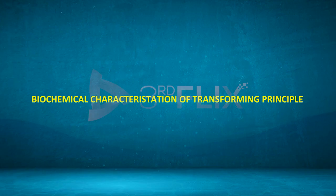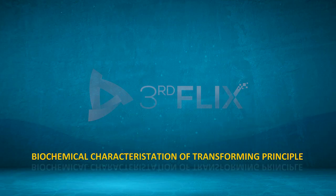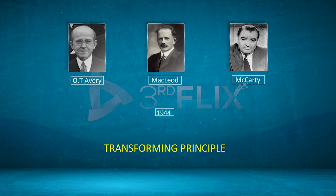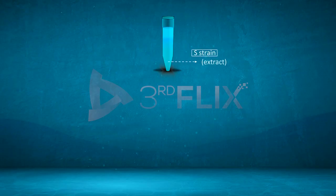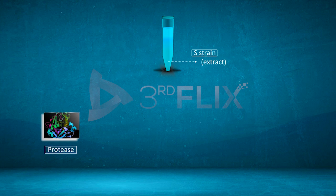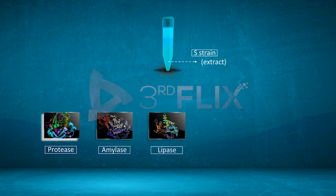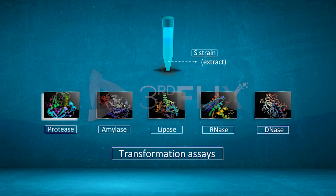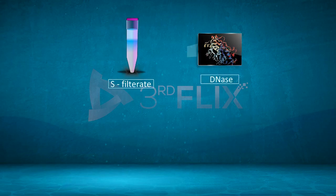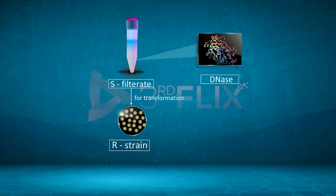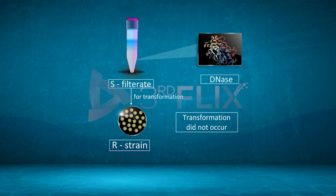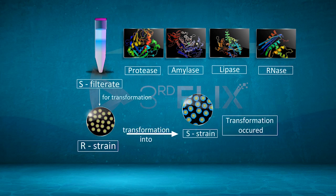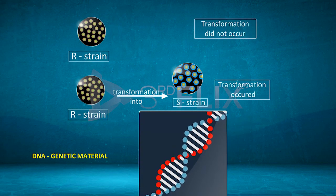Biochemical Characterization of Transforming Principle: O.T. Avery, McLeod, and McCarty identified the transforming principle in 1944. In their experiment, S-strain extract was treated with various enzymes like protease, amylase, lipase, RNase, and DNase, and transformation assays were conducted. When S-filtrate was treated with DNase, transformation of R-strain to S-strain did not take place. When treated with other enzymes, transformation occurred. Hence, they concluded that DNA was the genetic material.